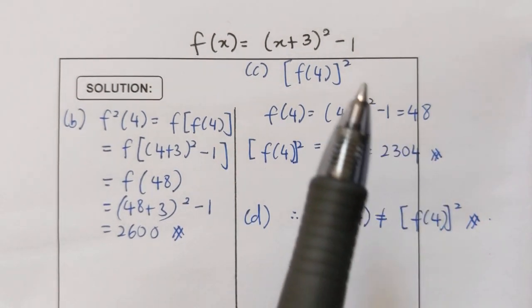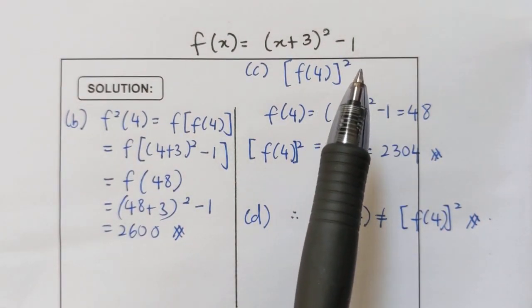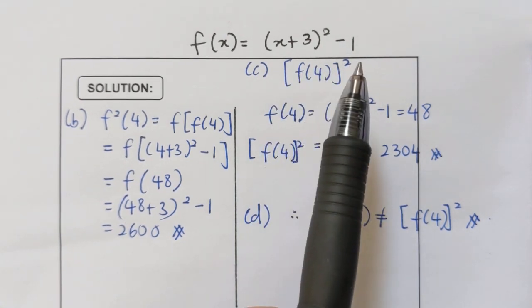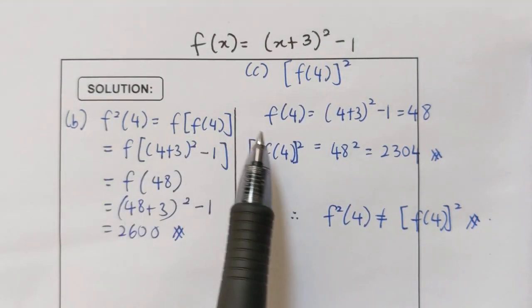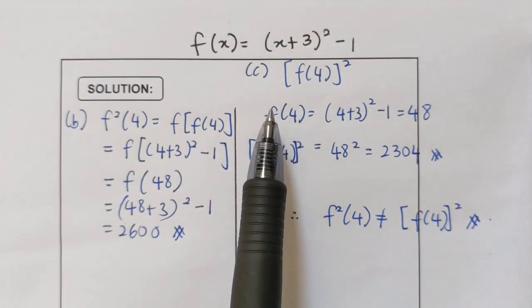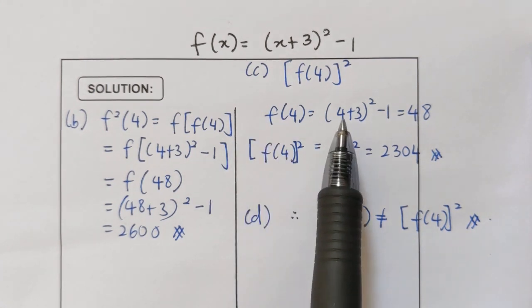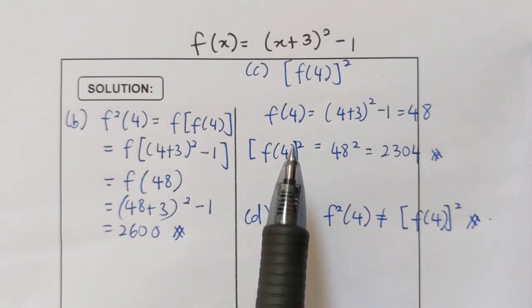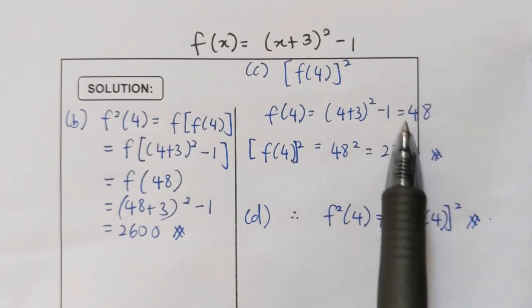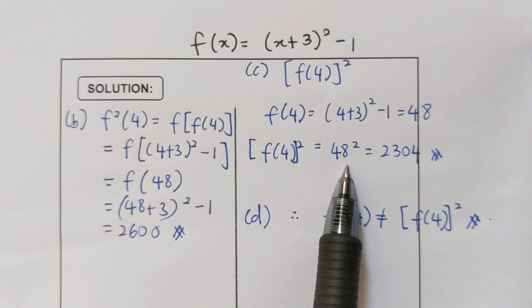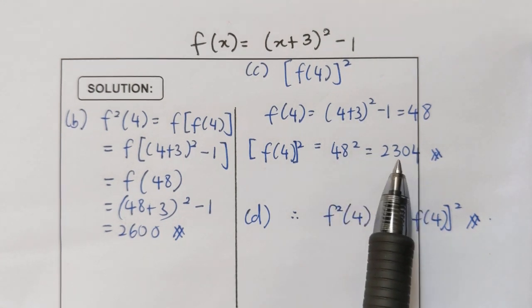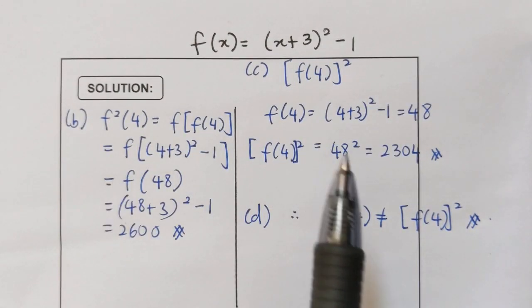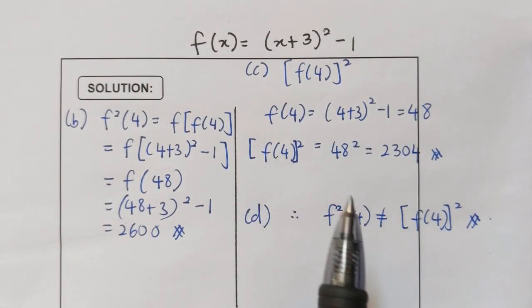Now for c, we need to find [f(4)]². This is actually the answer for f(4) and then you square the answer. First you need to find f(4): substitute 4 into my function f, I have (4 plus 3) squared minus 1, which is 48. And now I square f(4), so this is 48 squared, and my answer is 2304. So I need to compare between b and c, and we can see that b and c are not the same.